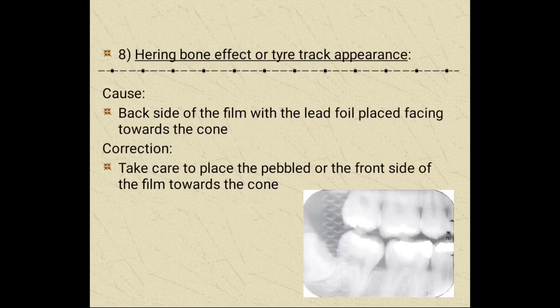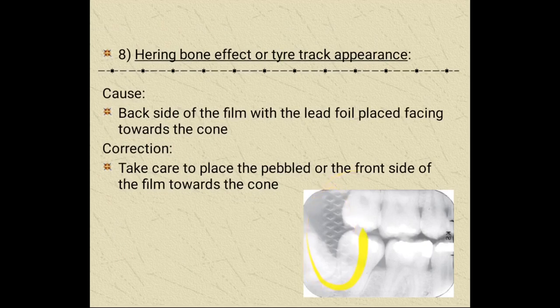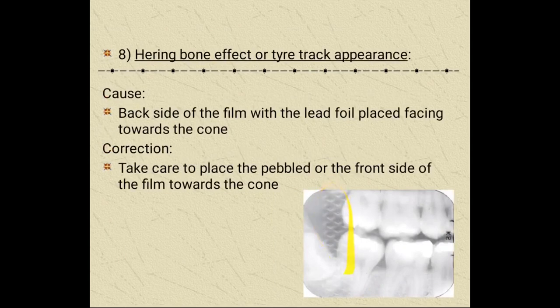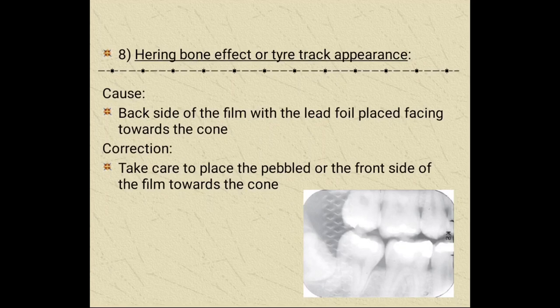A very important finding is the herringbone effect or tire track appearance. It is due to the backside of the film — with the lead foil — being placed facing towards the cone. It should be vice versa. We should take care to place the pebbled or front side of the film towards the cone. When the opposite side is placed towards the x-ray beam, the tire track or herringbone effect will appear. This herringbone effect is very important to know.